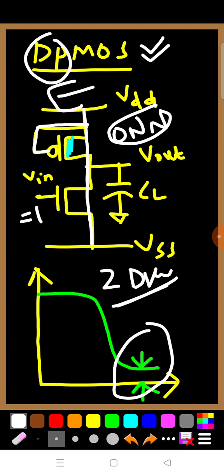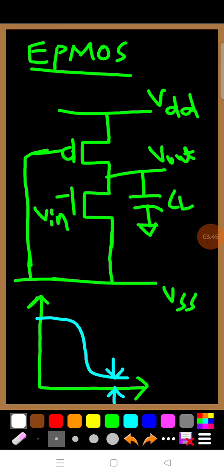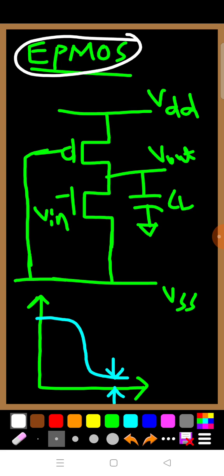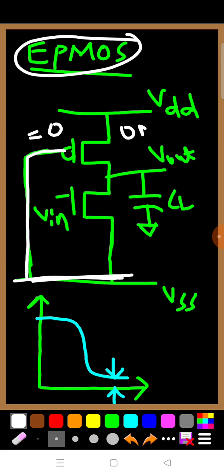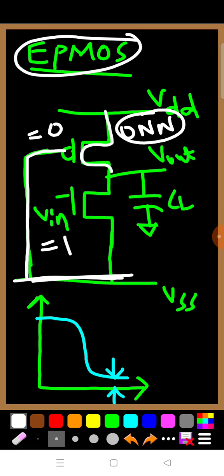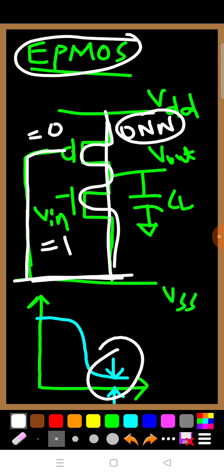One more option is the enhancement mode PMOS transistor as a pull-up. Since it is enhancement mode PMOS, the gate should be connected to zero — that is, Vss. However, when the gate is connected to Vss, this pull-up device is always in the on condition. When Vin equals one, there is a static current flow from Vdd to Vss, leading to high power consumption, and the output never reaches zero. We have now tried all possibilities of pull-up devices.